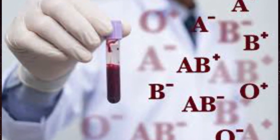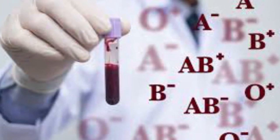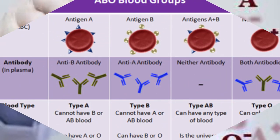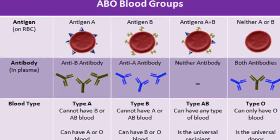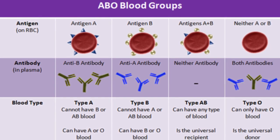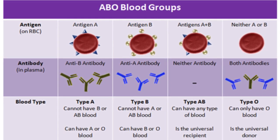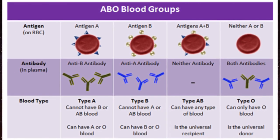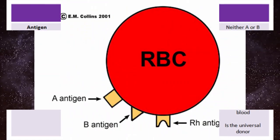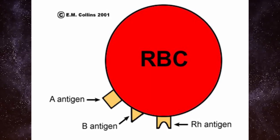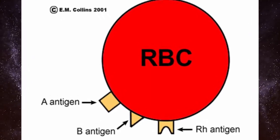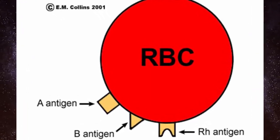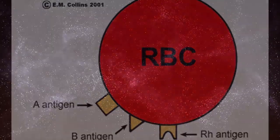Blood types are based on the markers, or antigens on the surface of red blood cells. There are two major antigens on human RBCs: the A and B antigens. Another important surface antigen is called RH.